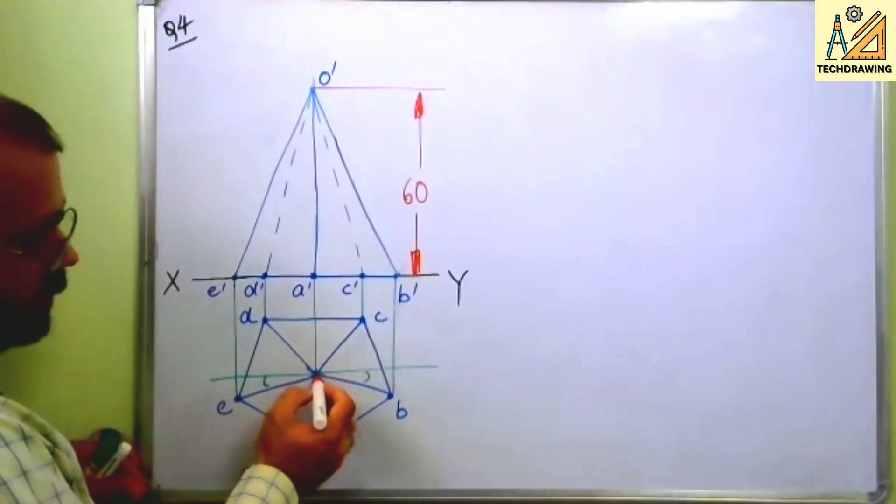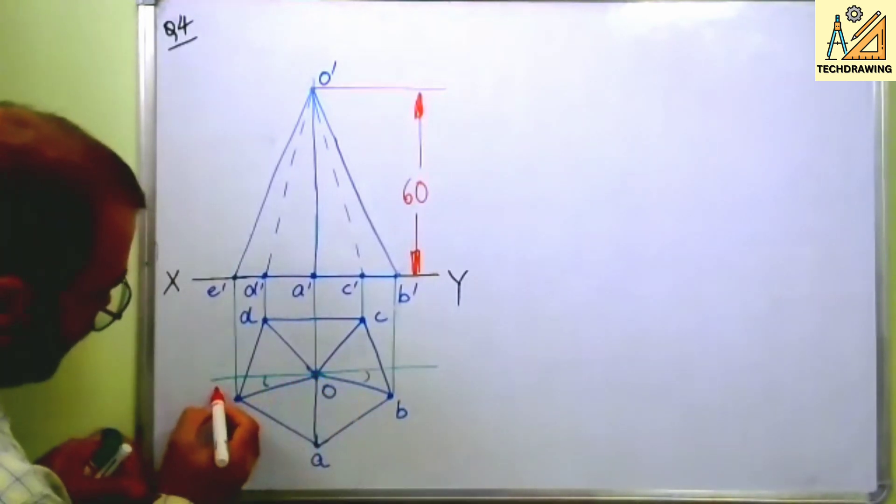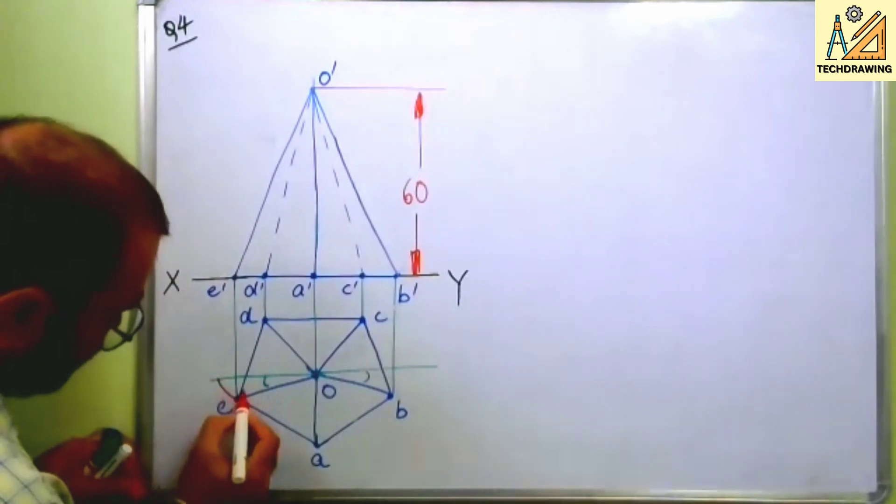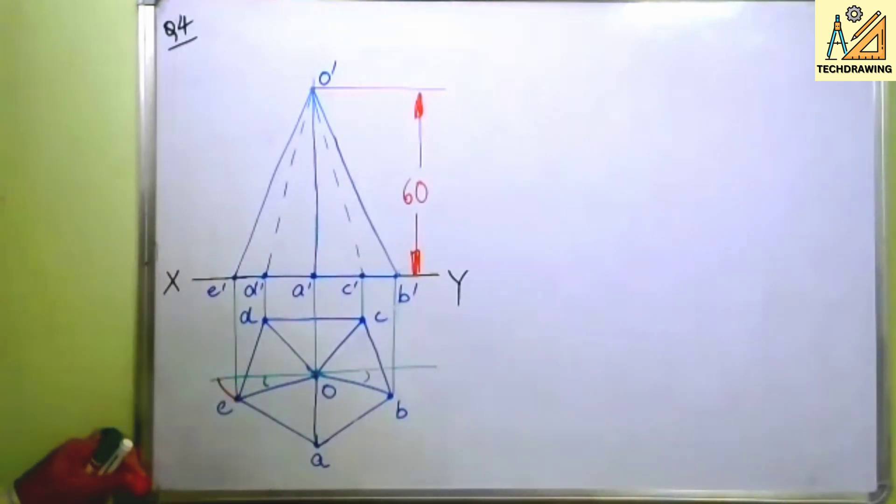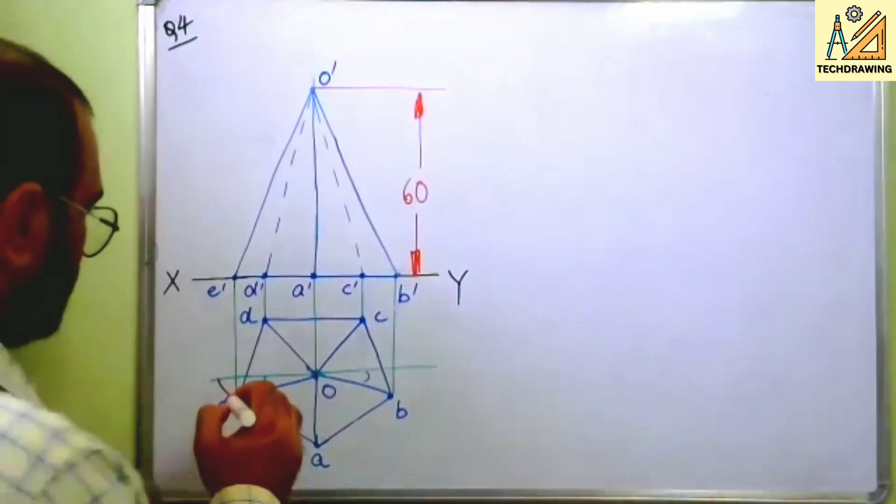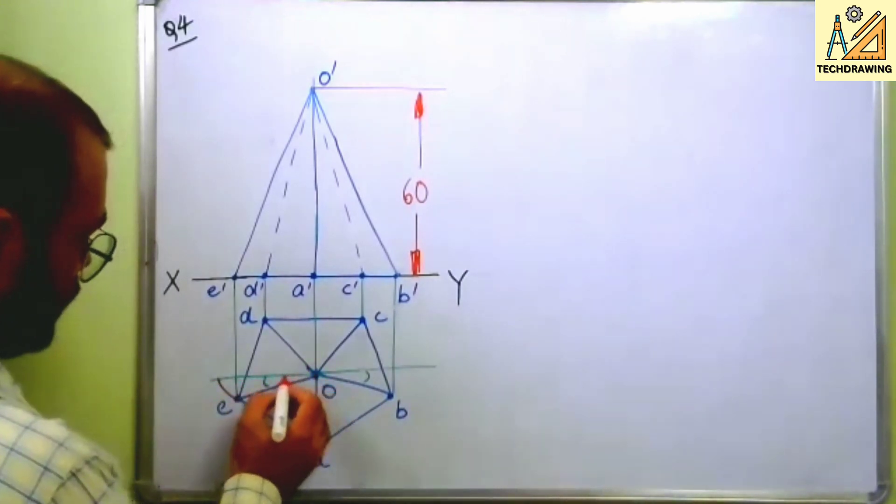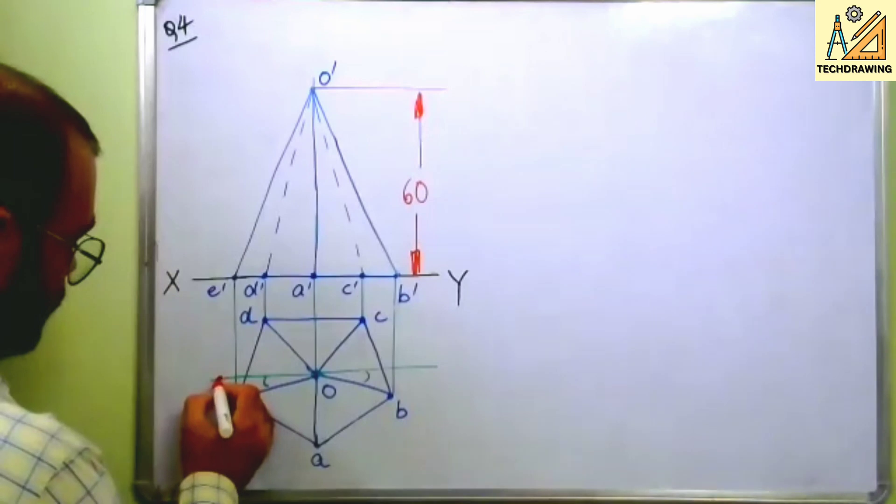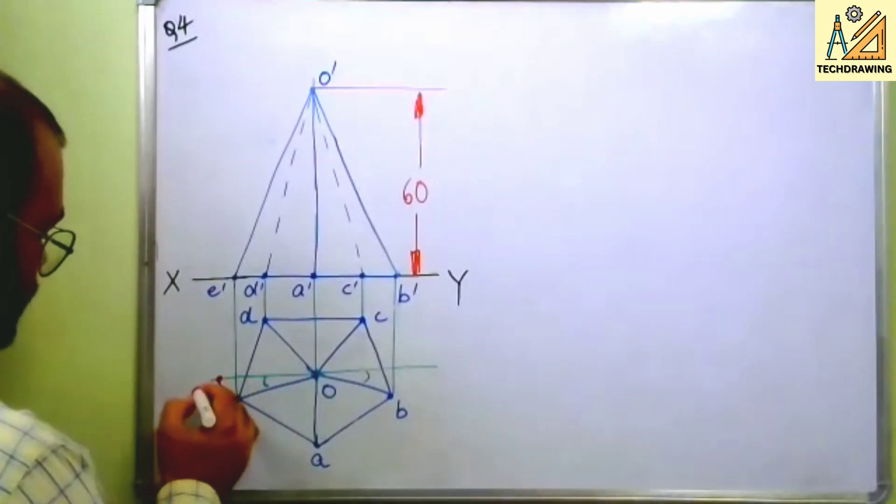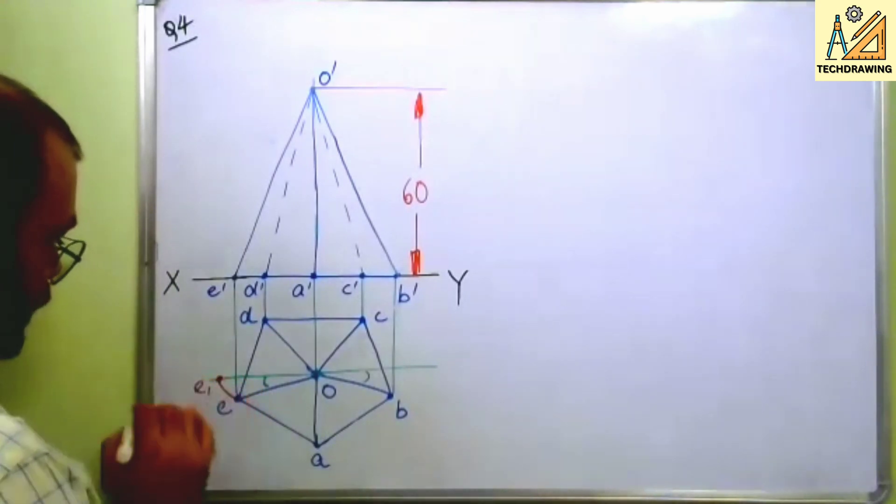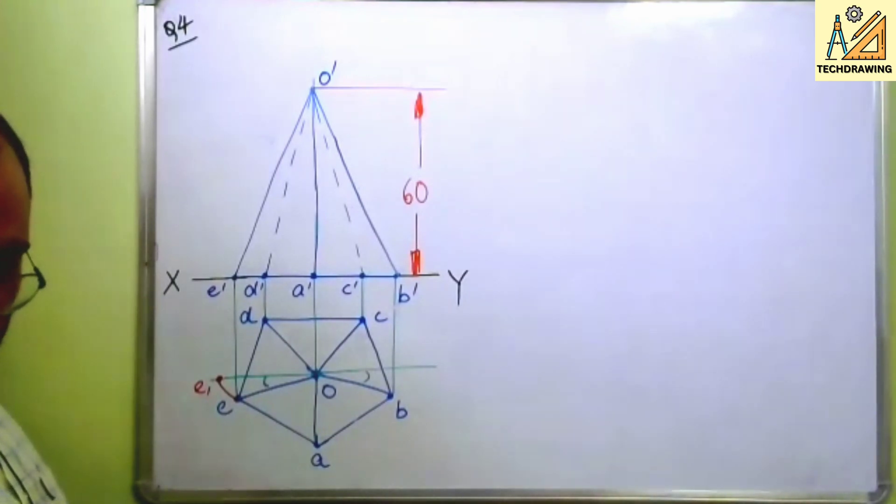Keep your compass at O, open it till E and draw an arc like this. You have got the actual length of slant edge. Now you name it as E1.